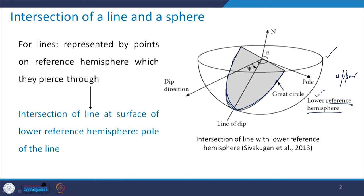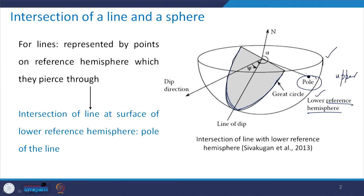For lines, the intersection is represented by the points on the reference hemisphere which they pierce through. Imagine a 3D situation where you have a sphere and there is a line. Its intersection will not look like a plane but will look like a point. That is what we call the pole of a line. The intersection of a line at the surface of the lower hemisphere is the pole of the line.